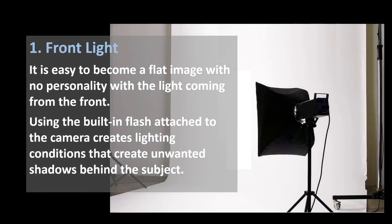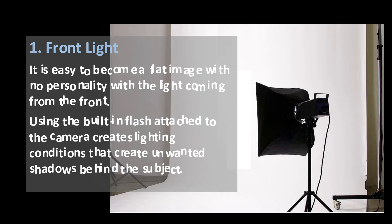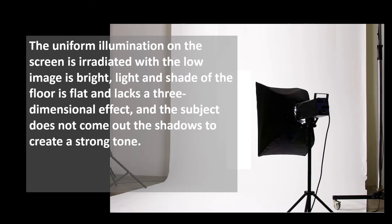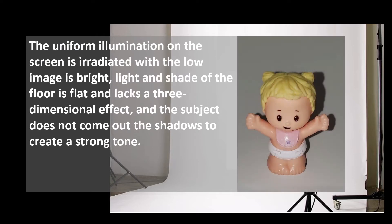1. Front Light. With light coming from the front, it is easy to become a flat image with no personality. Using the built-in flash attached to the camera results in lighting conditions that create unwanted shadows behind the subject. The uniform illumination is bright but the light and shade of the floor is flat and lacks a three-dimensional effect, and the subject does not stand out due to strong tone shadows.